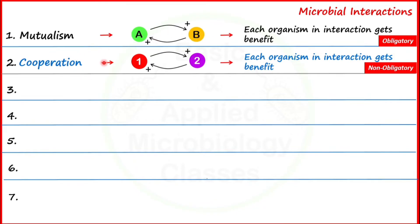Cooperation, on the other hand, is a kind of non-obligatory relationship between the partners involved. This means if we separate two from one, the survival of both one and two will still be possible in the same environment, because they are not totally dependent on each other for their survival. Although some functions can be impaired once they are separated, they can still survive independently. This non-obligatory nature of the relationship means the interaction is called cooperation.